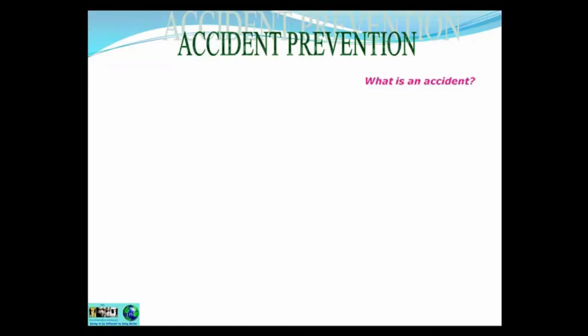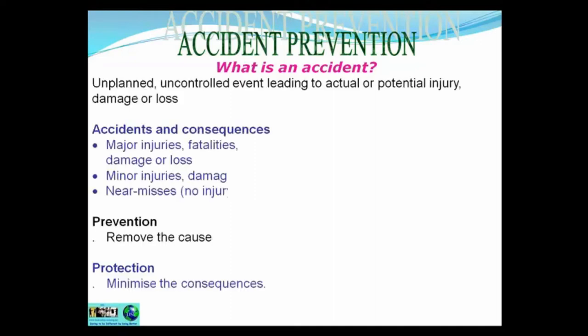Accident prevention — first of all, what is an accident? Pause the presentation and write down what you think the definition is. An accident is an unplanned, uncontrolled event leading to actual or potential injury, damage or loss. We've got no control — we can't plan it. If we could control it, there wouldn't be an accident.